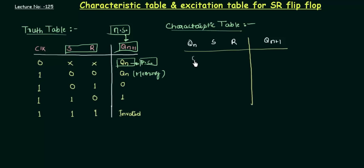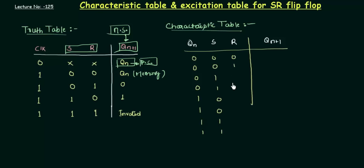Let me first make the combinations: 0 0 0, 0 0 1, 0 1 0, 0 1 1, 1 0 0, 1 0 1, 1 1 0, 1 1 1. This is a very interesting table — you will enjoy evaluating the values for QN+1. The excitation table will also be evaluated using this characteristic table, so it is important. Now let's try to find out the values for QN+1.